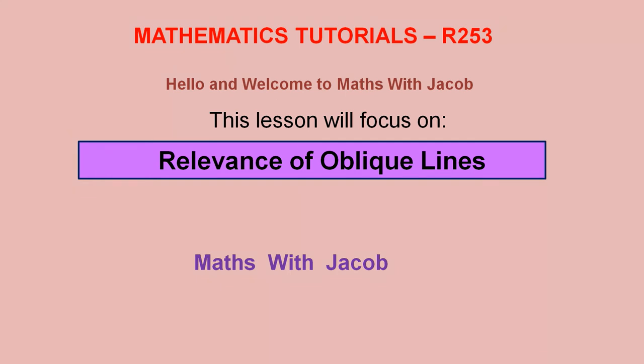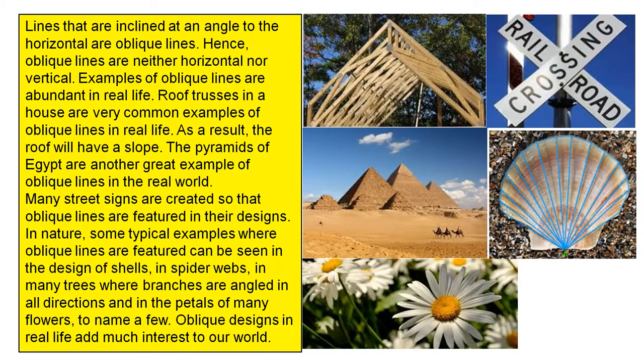Hello and welcome to Maths with Jacob. This lesson will focus on the relevance of oblique lines. Lines that are inclined at an angle to the horizontal are oblique lines. Hence, oblique lines are neither horizontal nor vertical.